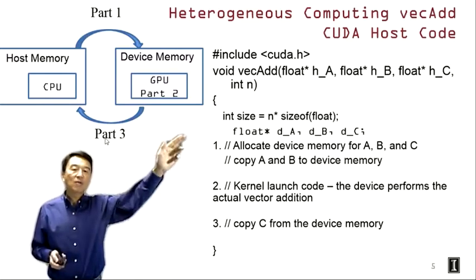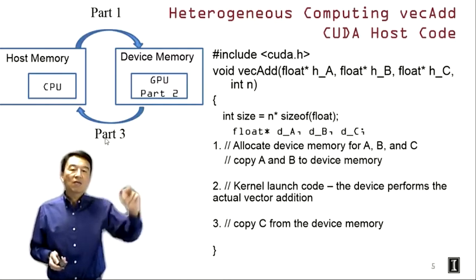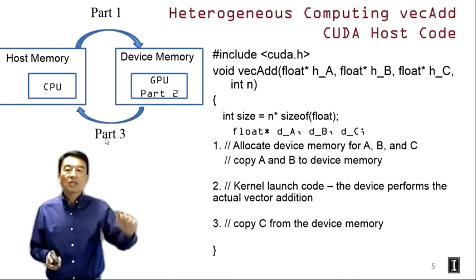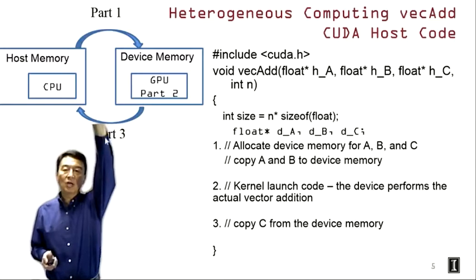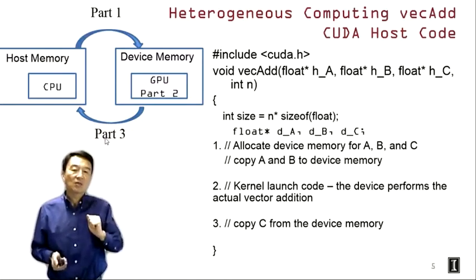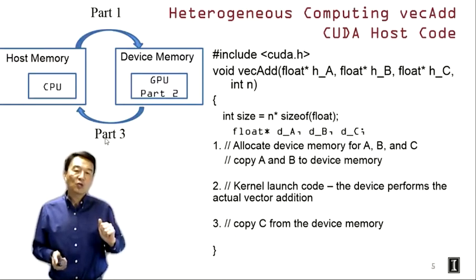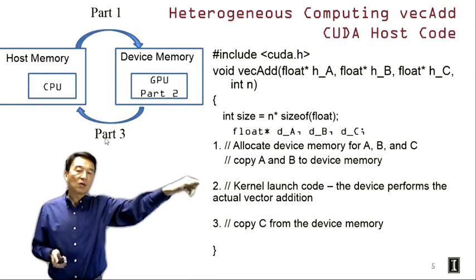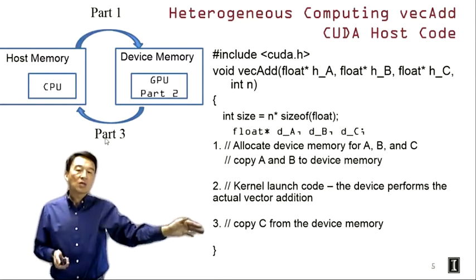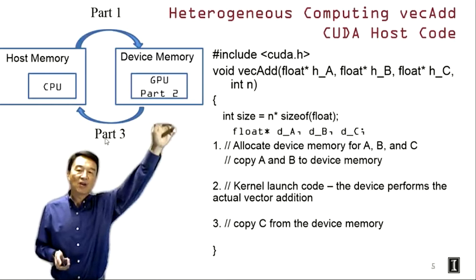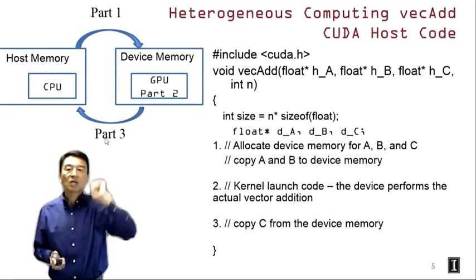There are three main parts in the host code. Part one allocates device memory for A, B, and C, and copies A and B to the device memory. Part two is for the host code to launch the kernel function, which will be the topic for the next lecture. After the kernel completes execution, part three copies C, the output result, back from device memory to host memory.